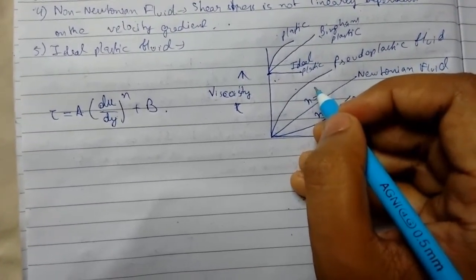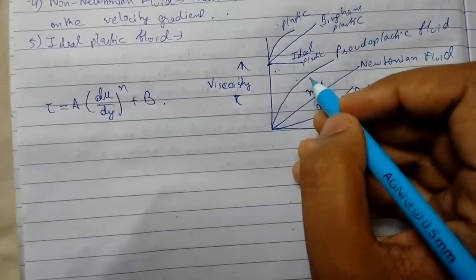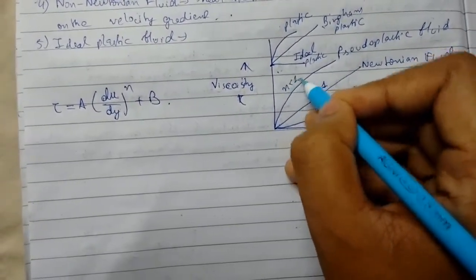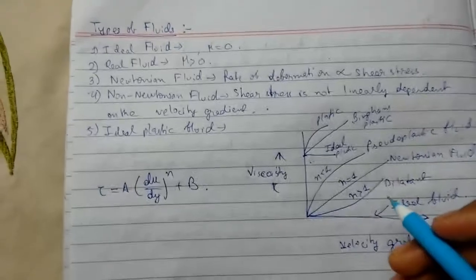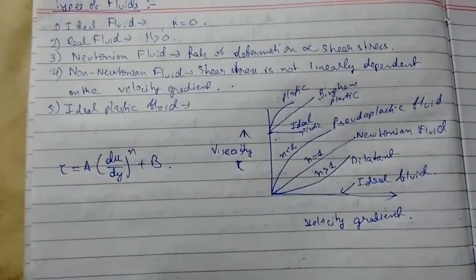For Newtonian, n is equals to one. And for pseudo plastic like paper pulp suspension, paints and all that, n is less than one. So this was all about types of fluid. Thanks for watching.